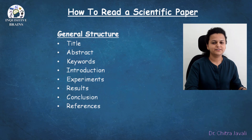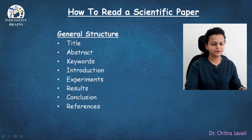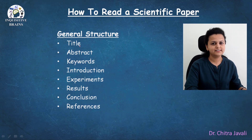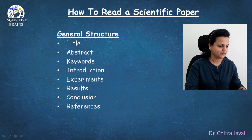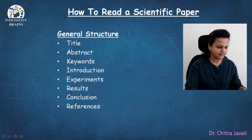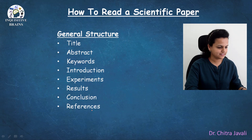A general structure of a conference or journal article will initially have the title, the abstract, followed by the keywords, the introduction of the paper, the experiments conducted in the paper, then the results, then the conclusion, and a complete list of references.